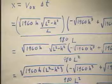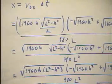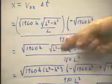We've multiplied the v0x function by the delta t function, and we've got a big function of h, and this is x.